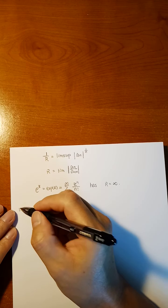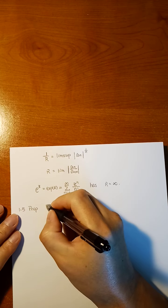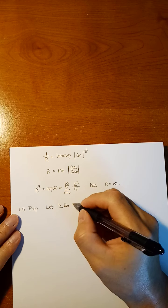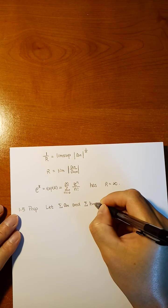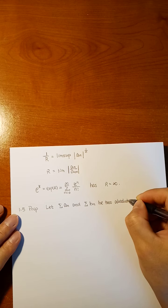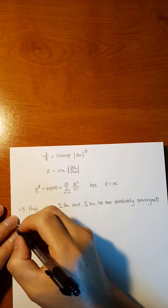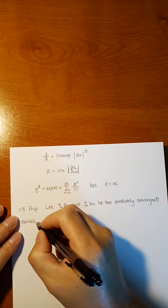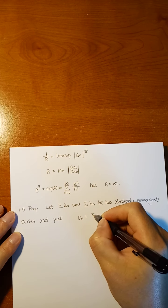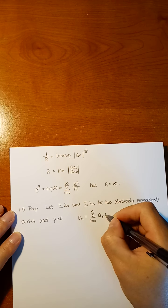Now let's continue. We have Proposition 1.5. It says: let a_n and b_n be two absolutely convergent series. We put c_n to be sigma k from 0 to n of a_k times b_{n-k}.